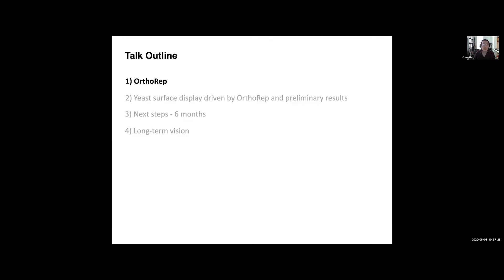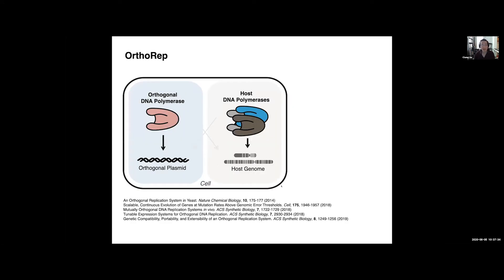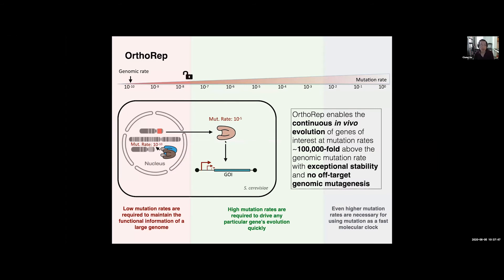So I'll just briefly go through some of the components. The main component is this orthogonal replication system where we basically have now in the lab cells that have a separate replication system that doesn't crosstalk with genomic replication. And the reason we want this second replication system is, as I said, so that we can make it highly error-prone. You have to have an isolated replication system, or at least a targeted replication system, if you're going to run really high error rates in a cell.